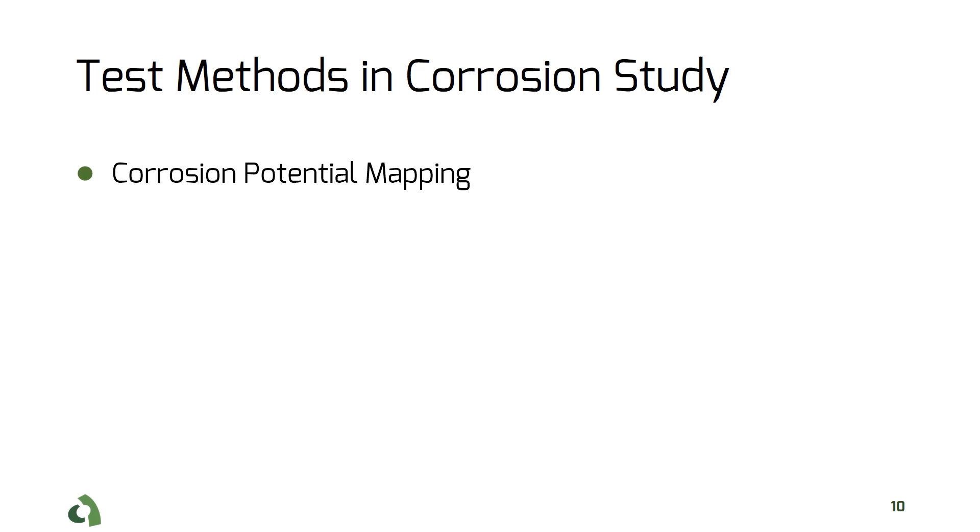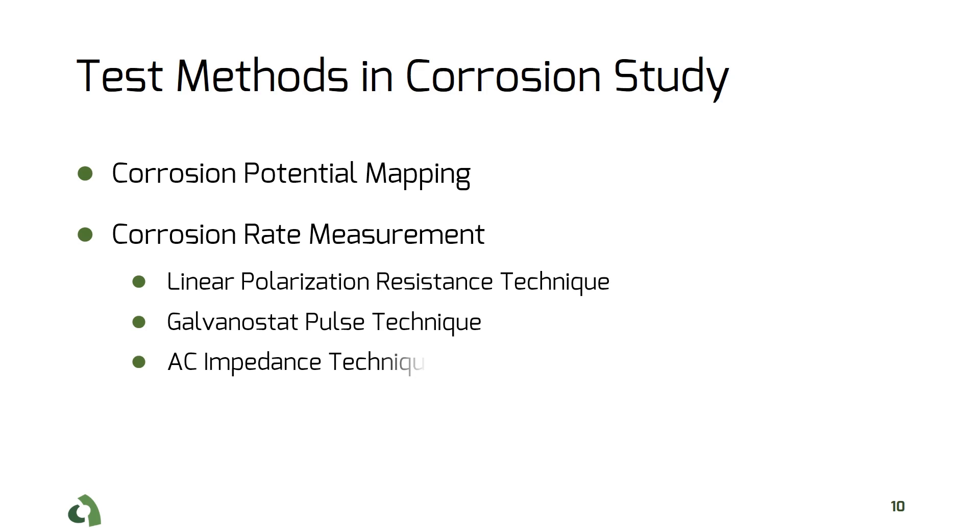The second concept is the rate of steel corrosion. The corrosion rate is about the kinetics of reactions and how fast the corrosion is progressing in the concrete. This becomes important in the context of life cycle assessment as it helps engineers better predict the remaining service life of a given structure.